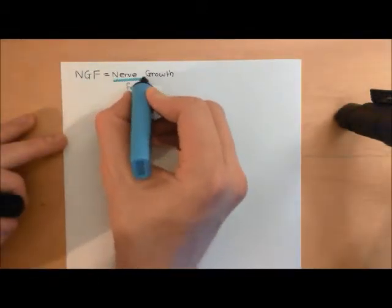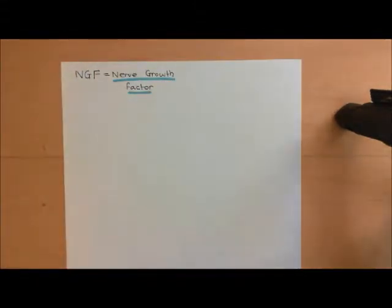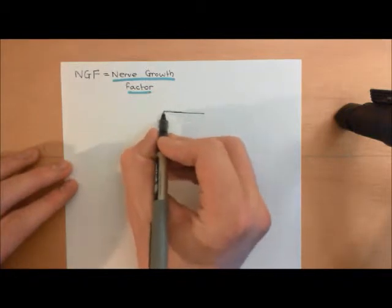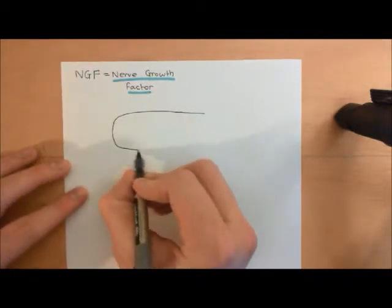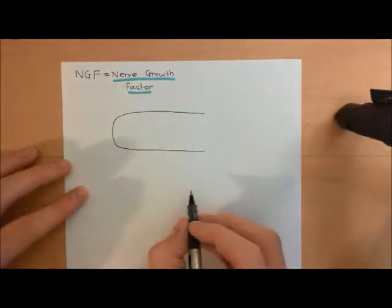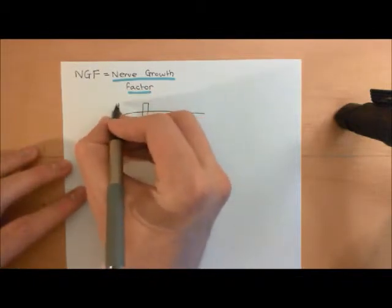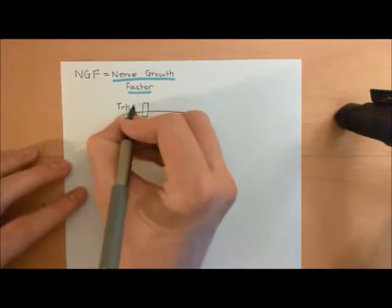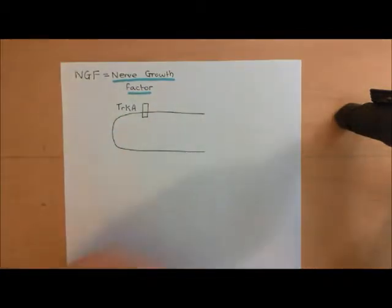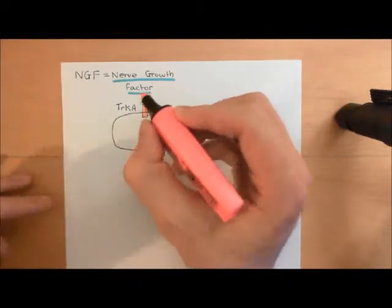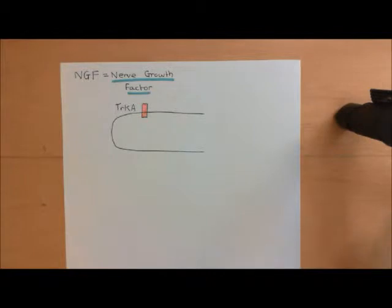In areas of inflammation, nerve growth factor starts to be produced and elevates in the tissue fluid. The nerve endings of nociceptors have receptors for nerve growth factor on their surface. If this is a free nerve ending of some nociceptor, then the receptor for nerve growth factor is known as TrkA, T-R-K-A for short. TrkA is a receptor tyrosine kinase, so it has a huge number of different pathways downstream of it.